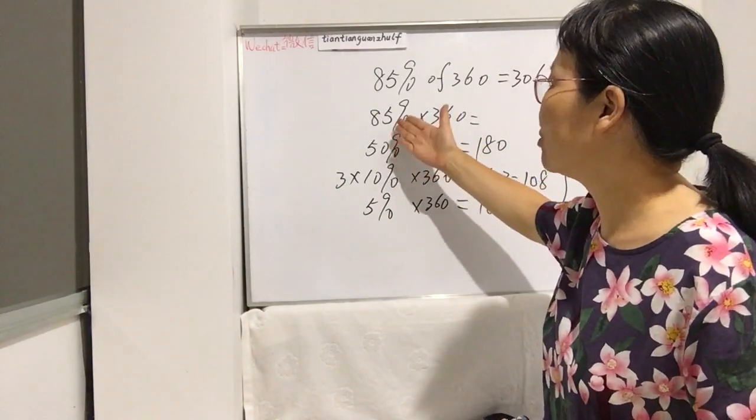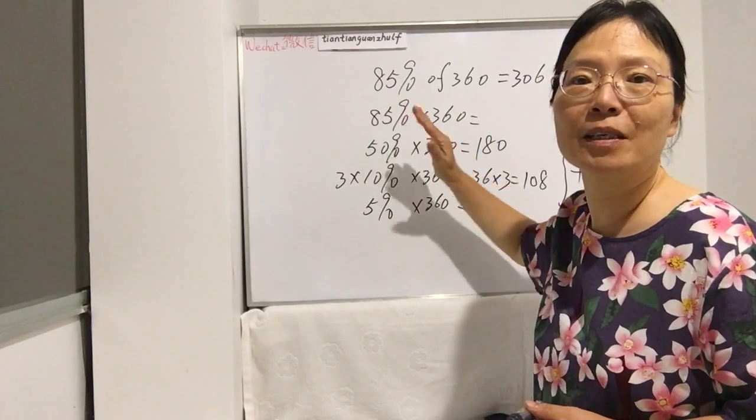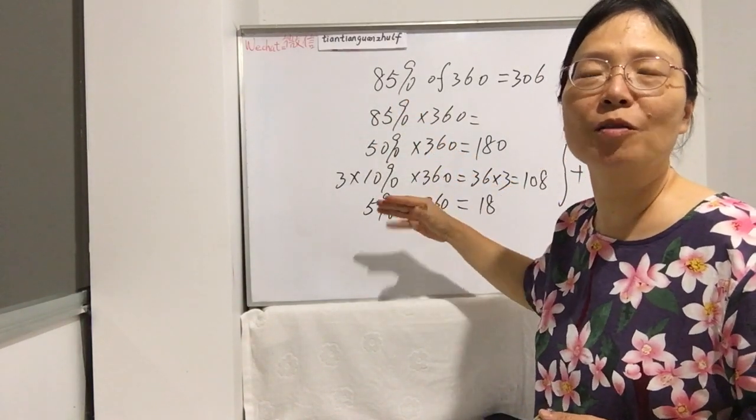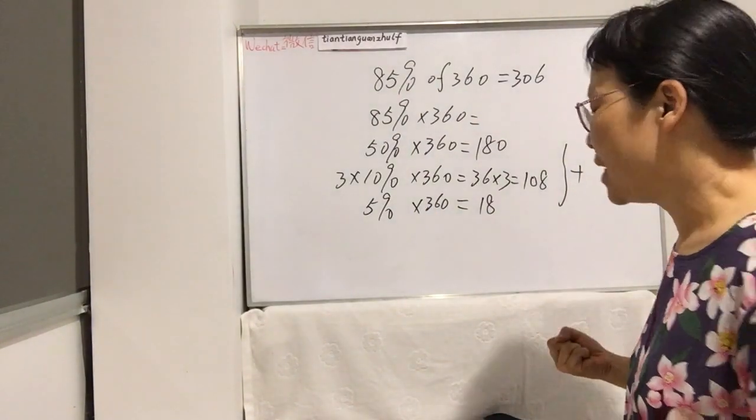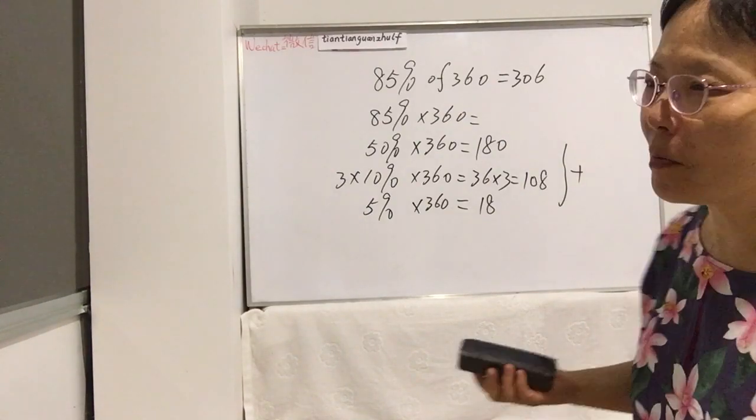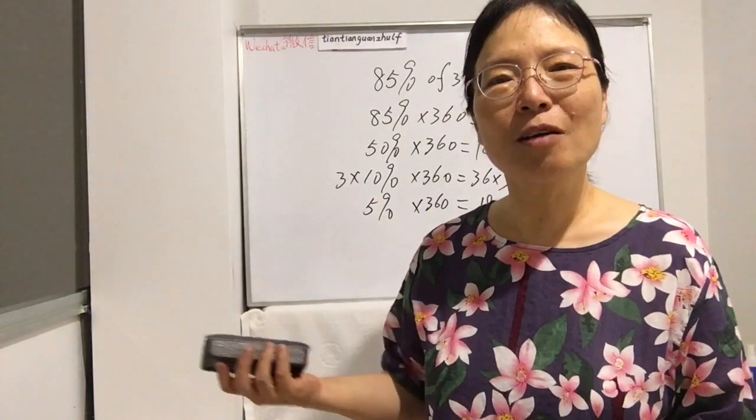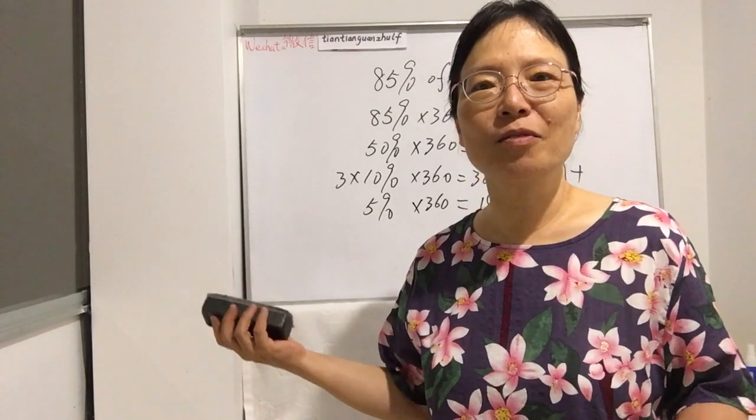So this is last lesson, but the main point is you need to master these skills—how do you make this 85% into smaller numbers, and this way you can very easily work out the answer. Now we are continuing our lesson today.